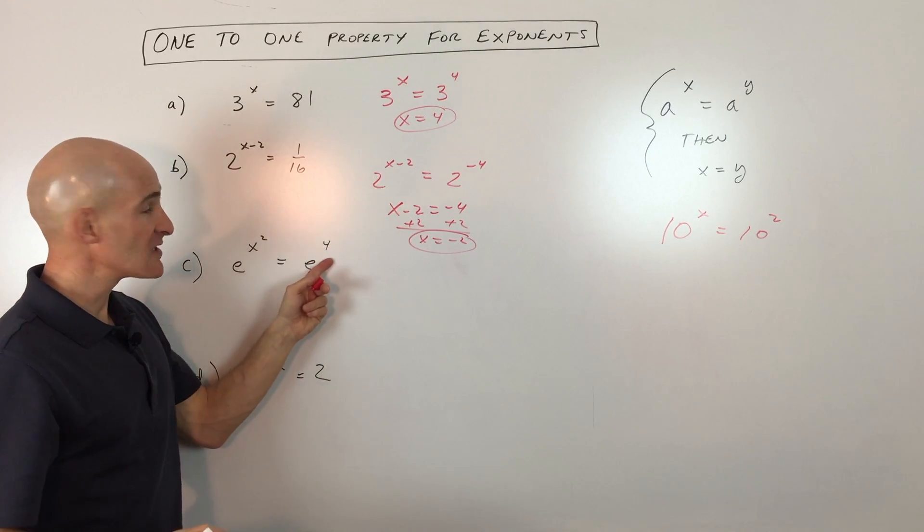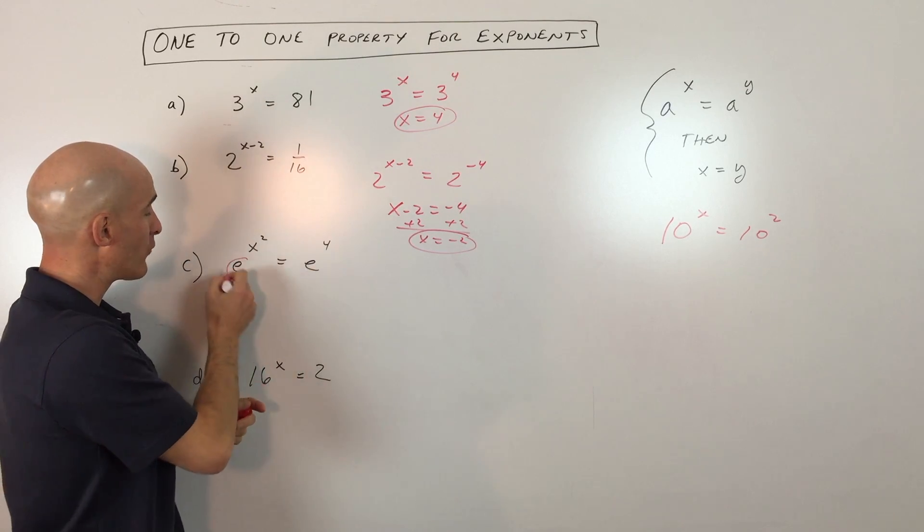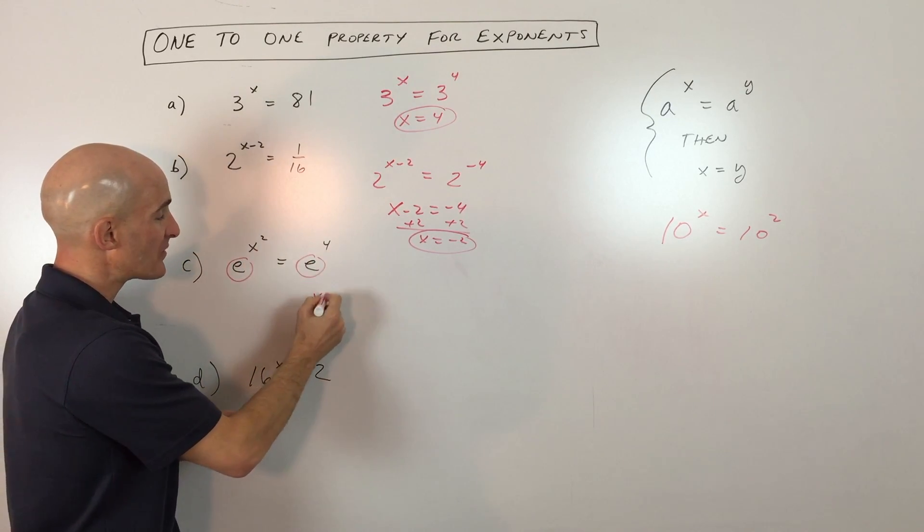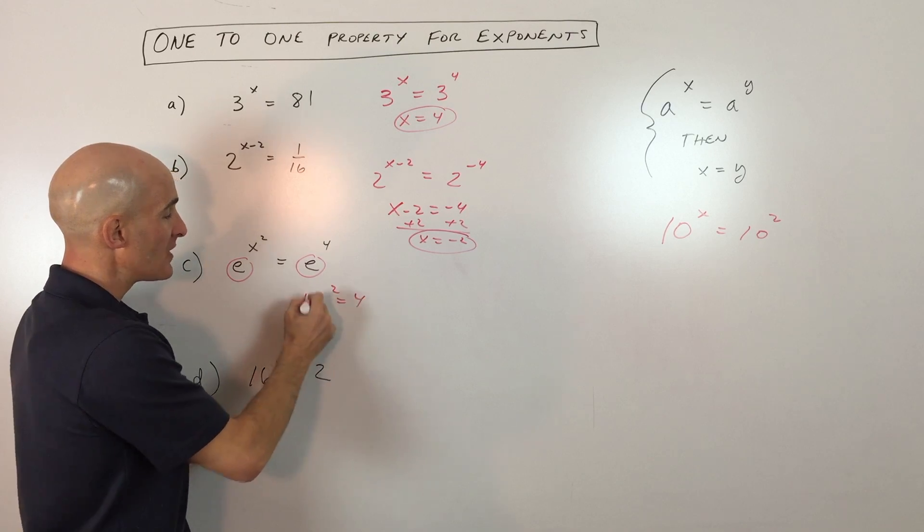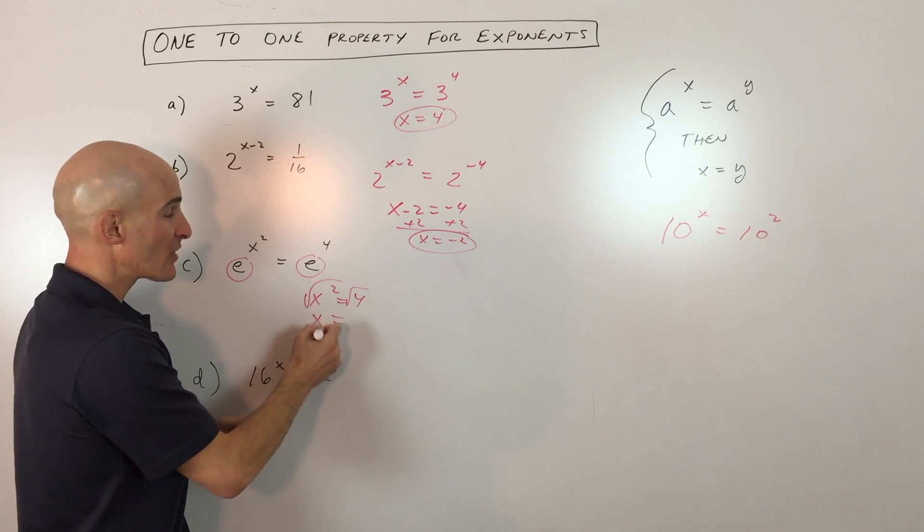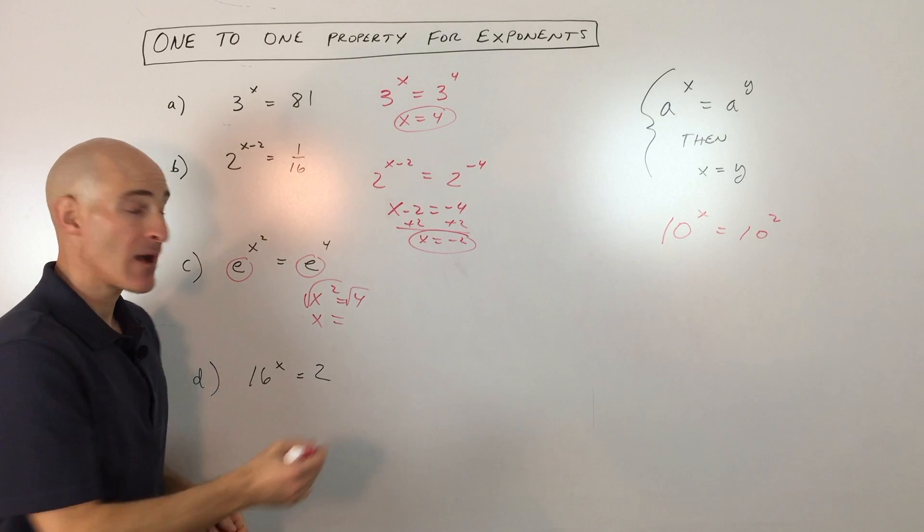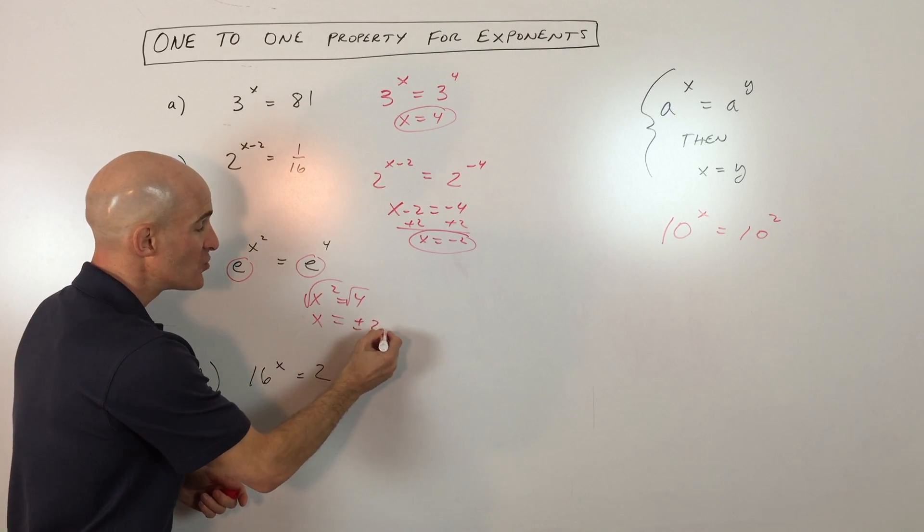e to the x squared equals e to the 4th. This one's pretty much set up for us. You can see we have the same base. Now all we have to do is set the powers or the exponents equal, take the square root of both sides. But don't forget, when you take the square root of both sides, how many answers do you get? Two answers, plus or minus 2.